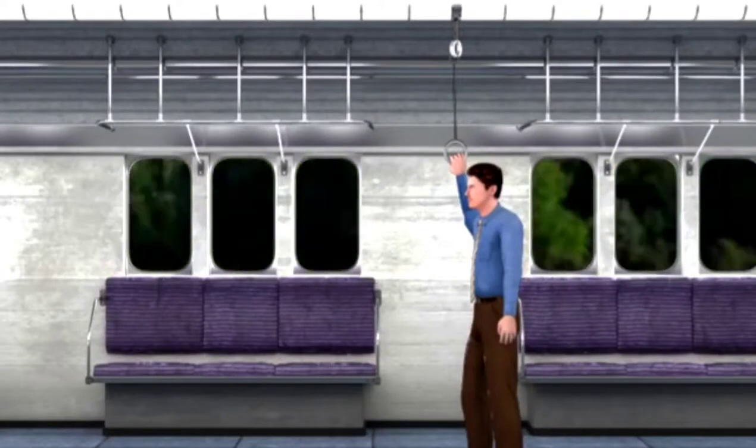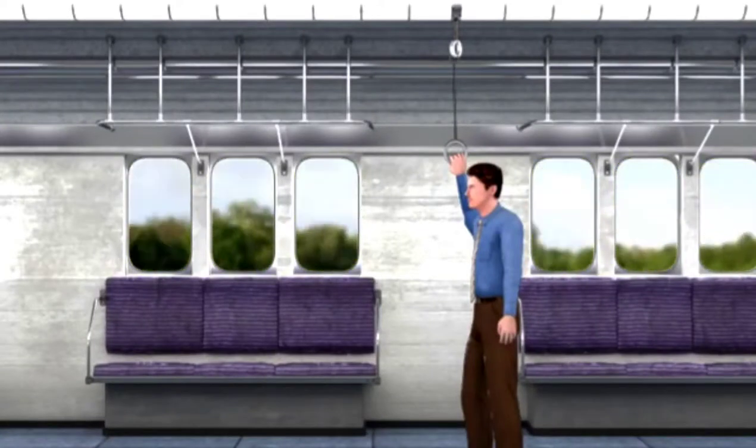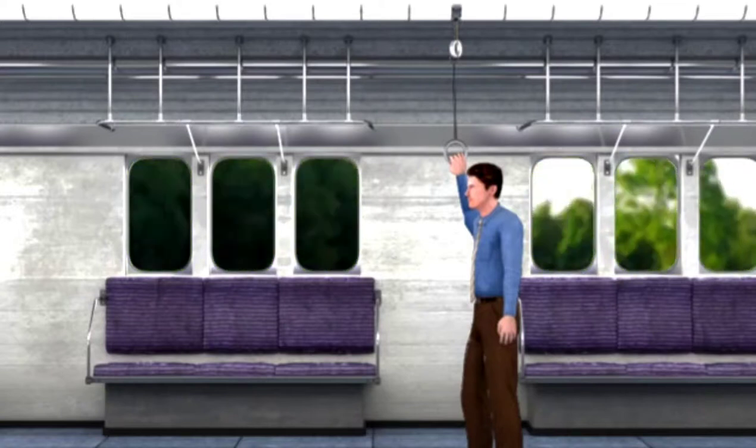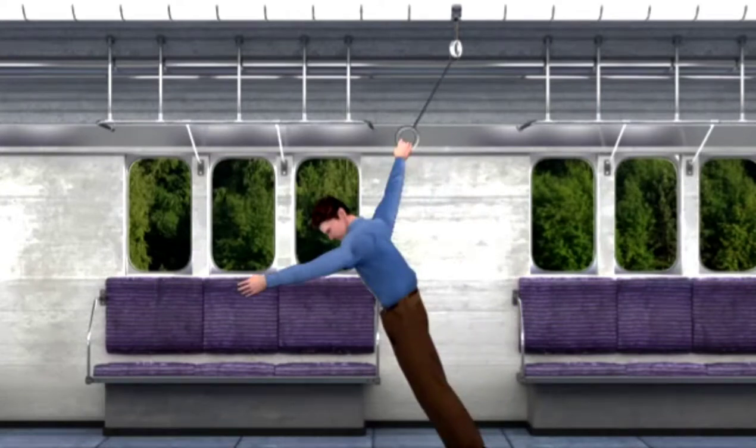Likewise, when a fast-moving subway car comes to a quick stop, passengers inside continue traveling at the previous uniform speed of the car and get thrown forward. This property of matter to remain at rest or in motion is known as inertia. Newton's first law is often termed the law of inertia.